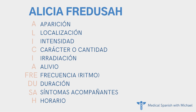The acronym is ALICIA FREDUSA: A is aparición — appearance or onset. L is localización — location in the body. I is intensidad — intensity or severity. C is el carácter, la cantidad — related to quality in English. I is irradiación — radiation or expanding through the body. A is alivio — relief or alleviating. F-R-E is frecuencia — frequency — or ritmo — rhythm. D-U is duración — duration. S-A is síntomas acompañantes — accompanying symptoms. And H is horario — timing.